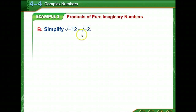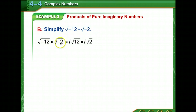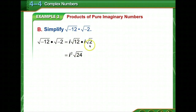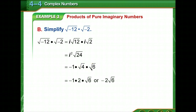Simplify the square root of negative 12 times the square root of negative 2. We get i radical 12 times i square root of 2. i times i is i squared, and 12 times 2 is 24. We can break down 24 as 2 squared times 6, so we pull out the 2. That gives us i squared times 2 times square root of 6, and since i squared is negative 1, the answer is negative 2 square root of 6.